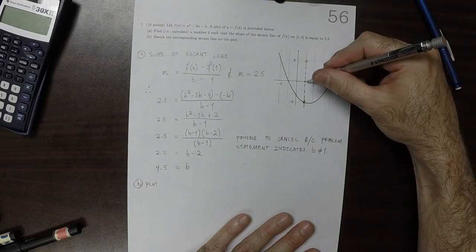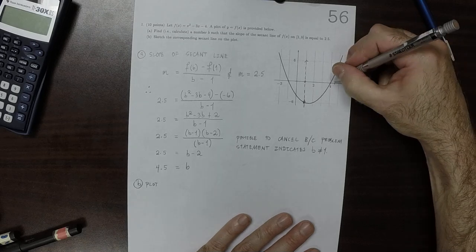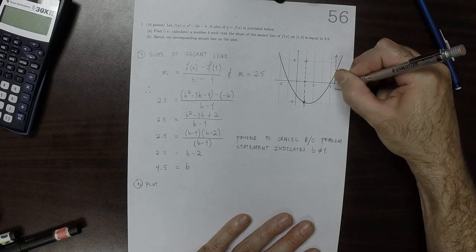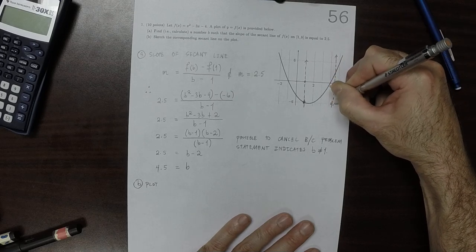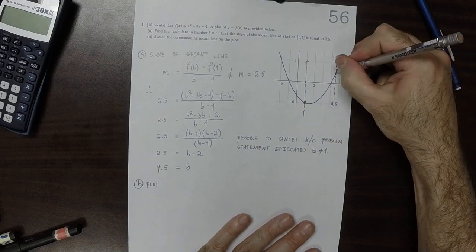So this is 1, 2, 3, 4 and 1 half. So this is 1, 2, 3, 4 and 1 half. So that's the other point.